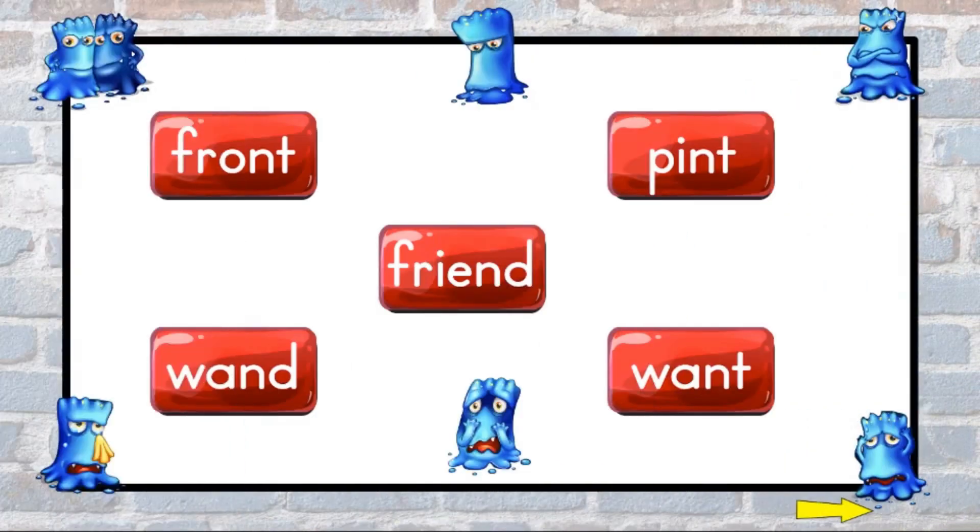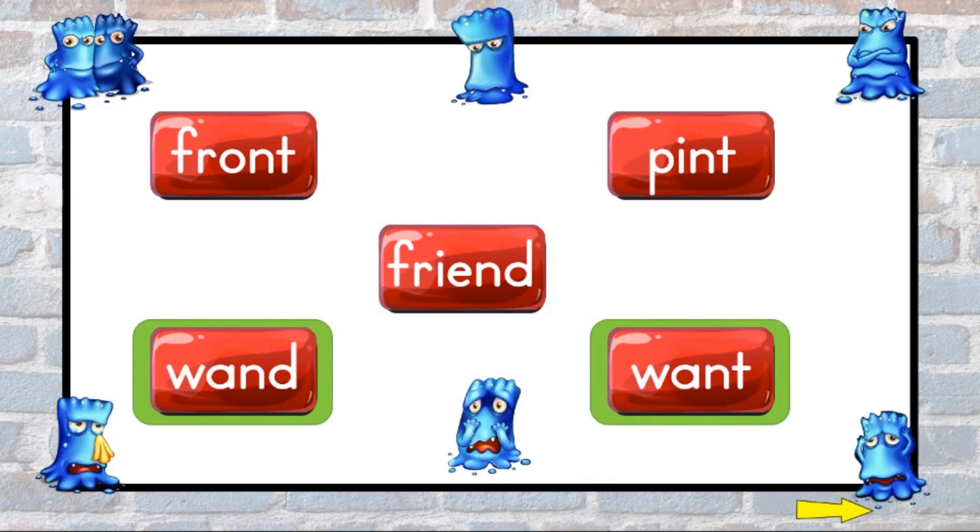All these words have vowel sounds that make them rule breakers. Look at each word and think about the vowel sound you would expect it to have. The word front has a short U sound. The word pint has a long I sound. The word friend has a silent I. The words wand and want both have a short O sound.